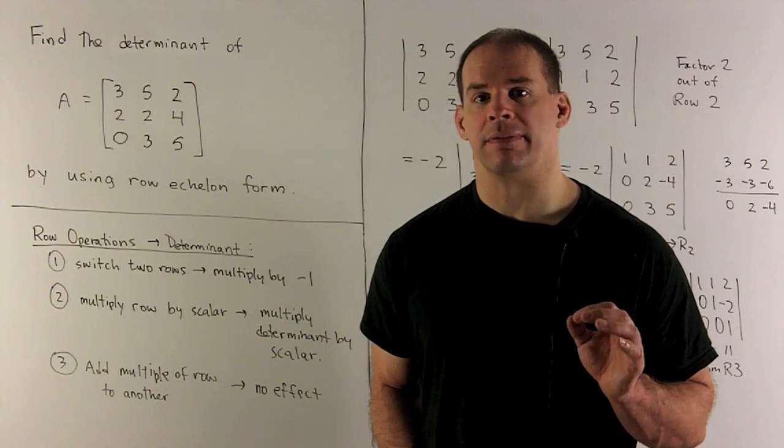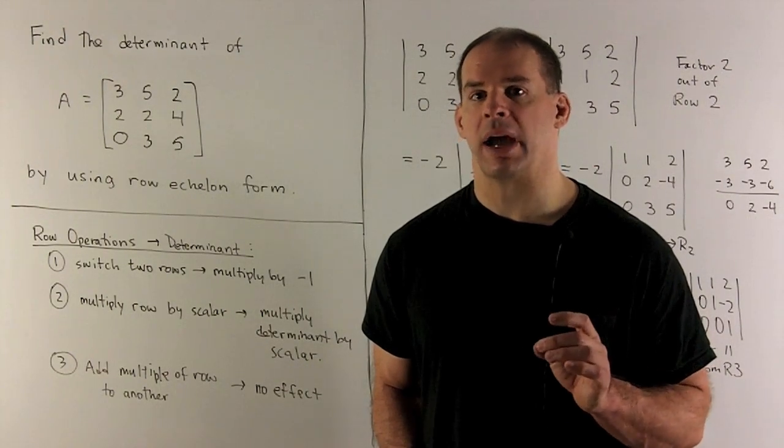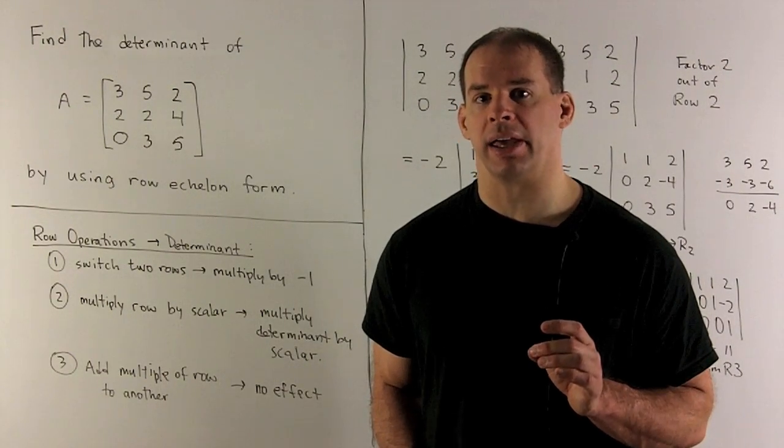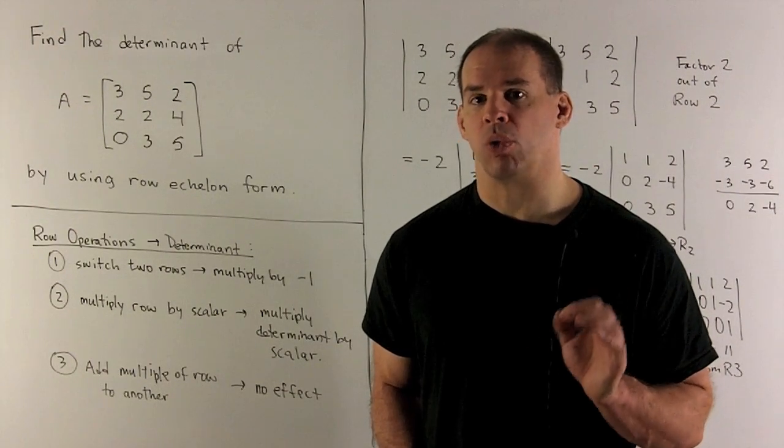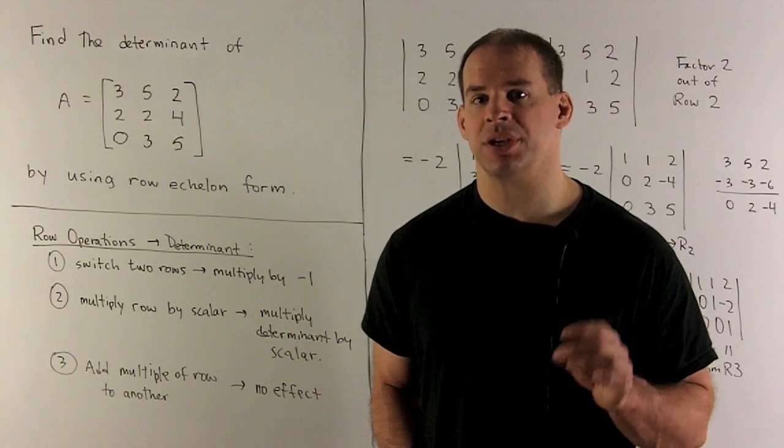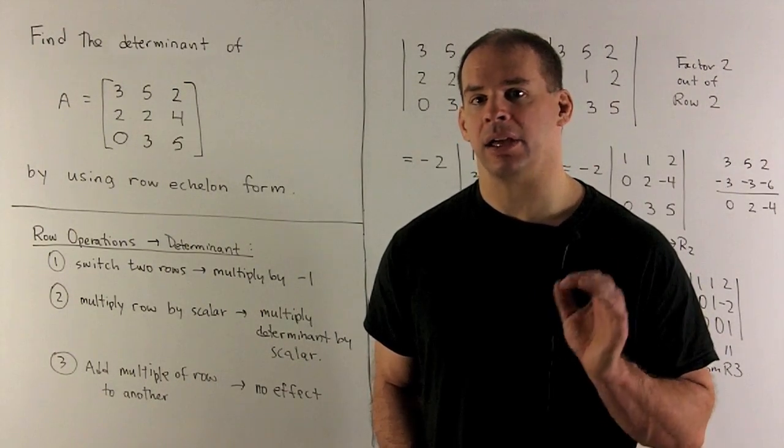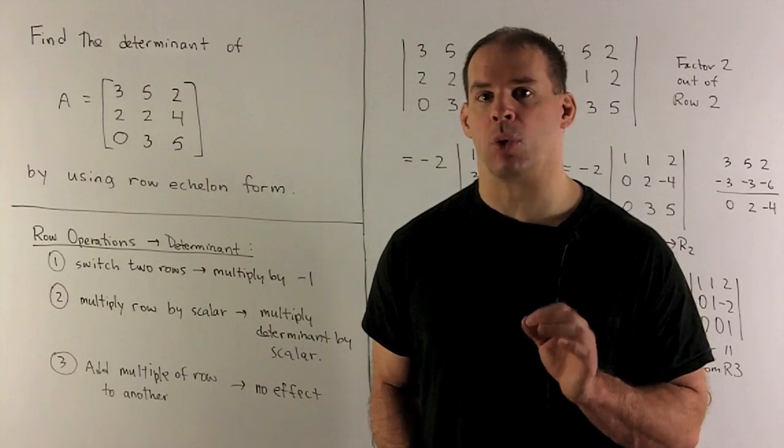Find the determinant of the following 3 by 3 matrix A by using row operations to put A in row echelon form.